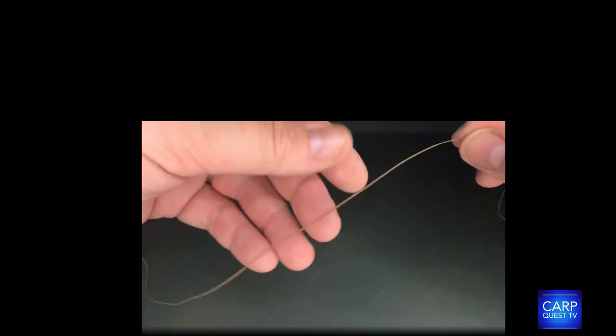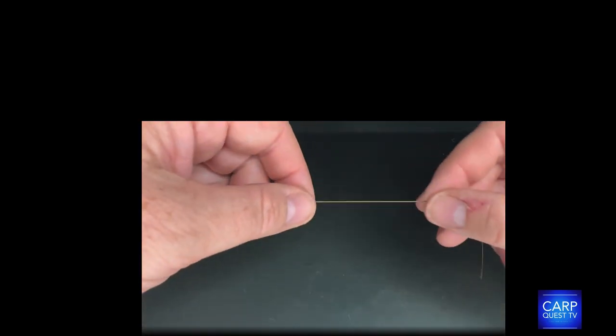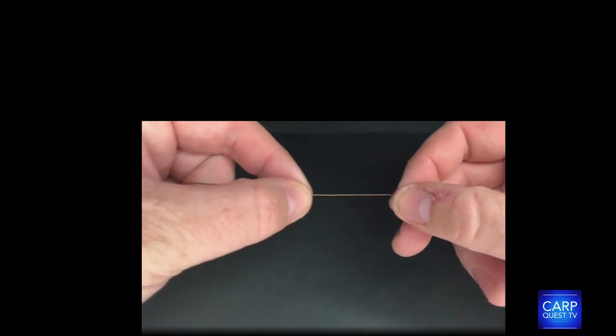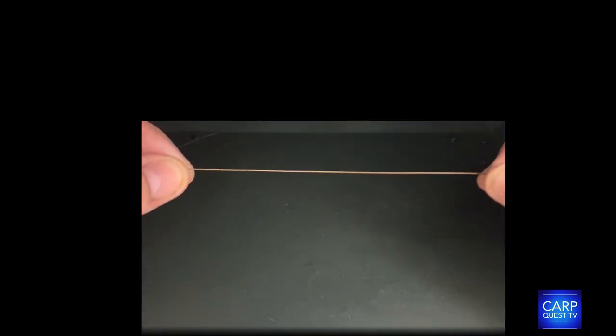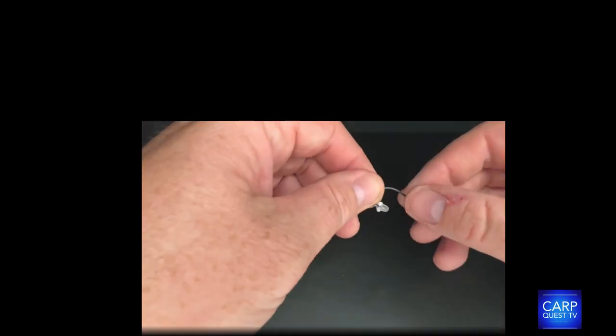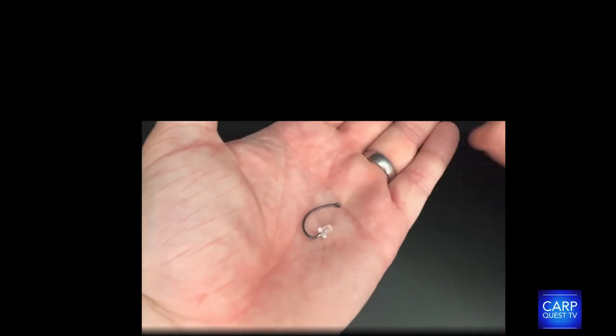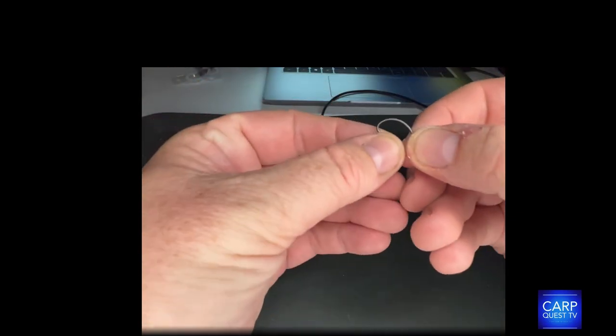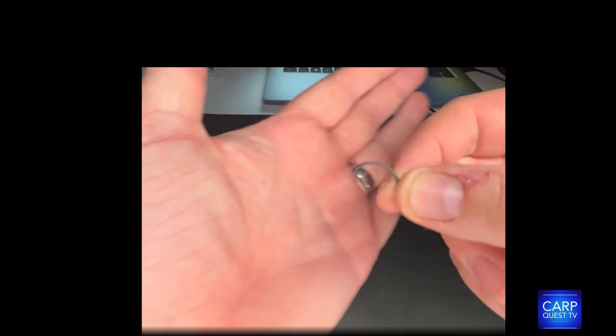There are a lot of different good braids on the market. I tend to favor this one because it's easy to work with and again, it's just very, very robust. What I'm going to do first of all is just strip back the coating. As you can see here, I've stripped around six inches or so, revealing the uncoated inner core. The hook I favor are the sharpened size four muggers.